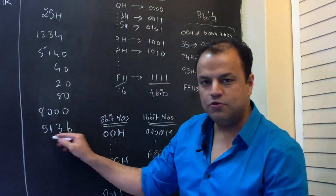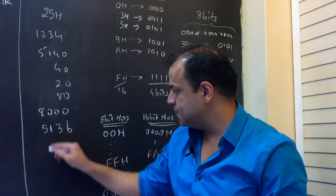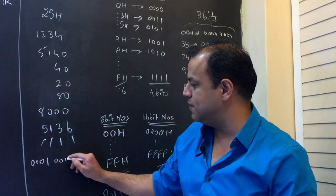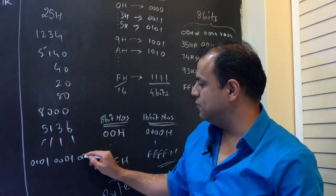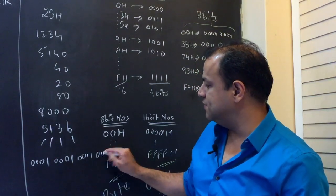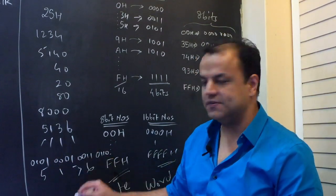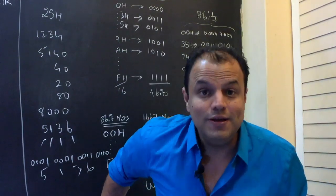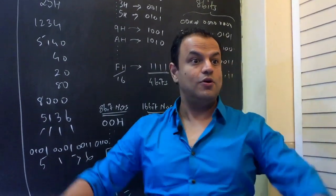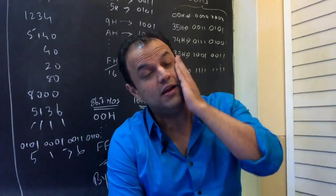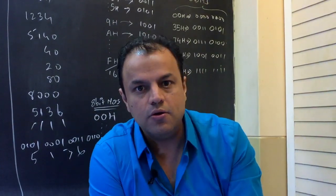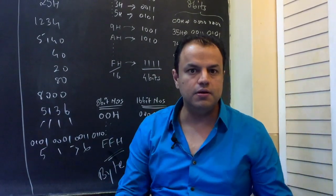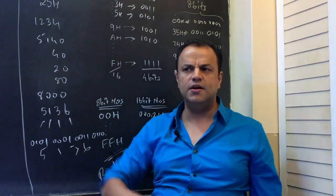If I ask you to represent 5136 in binary: 5 is 0101, 1 is 0001, 3 is 0011, 6 is 0110. That is 5136. Anytime if I ask you to represent any number, you need to be able to do it. These are all basics. Microprocessors is very deep and very interesting, but your basics have to be right. This is a point where many people get stuck.